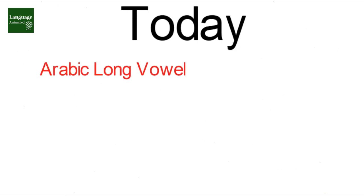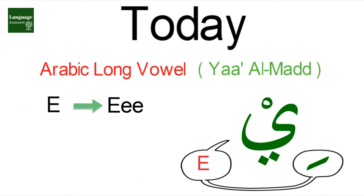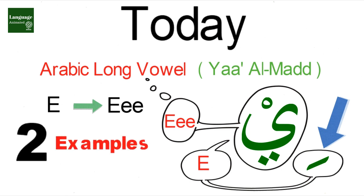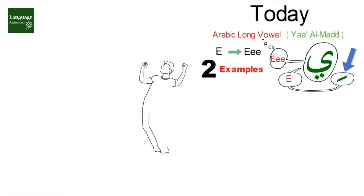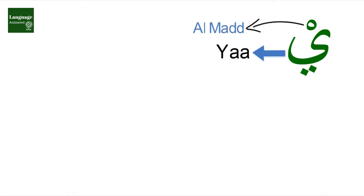Today we will learn another Arabic long vowel which is called ya al-mad. This vowel makes letters sound a little bit longer. As you know, kasra makes the 'E' sound, but ya al-mad makes the 'E' sound with kasra longer. I will give you two examples and then use it with all the letters. Please someone play my channel intro.